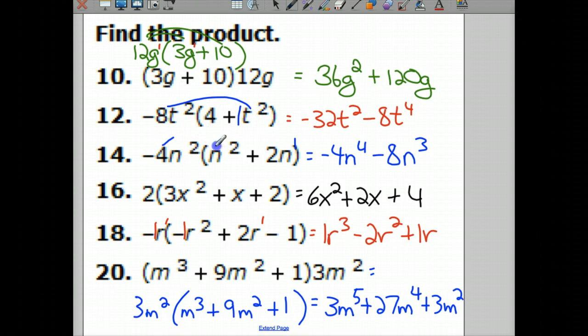Negative 4n² times positive 1n² is negative 4n to the fourth. Negative 4n² times positive 2n to the first is negative 8n to the third. This one's just a number, so you're just multiplying numbers times numbers here, and this is a 1, so all it does is change the numbers right here.